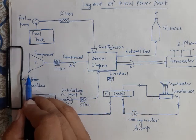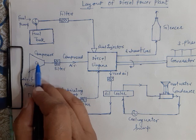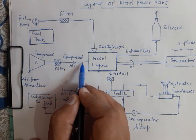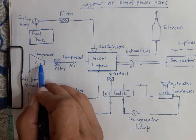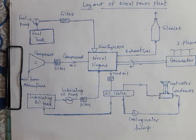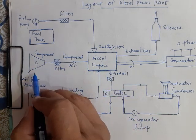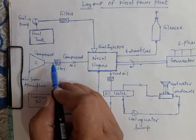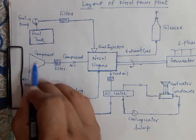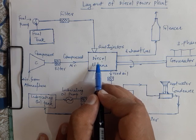Air is taken from the atmosphere, filtered by an air filter, and compressed by a compressor to a suitable compression ratio. This compressed air is supplied inside the diesel engine. When compression of the air takes place, it causes an increase in the pressure and temperature of the air. So we are supplying high pressure, high temperature compressed air inside the diesel engine.